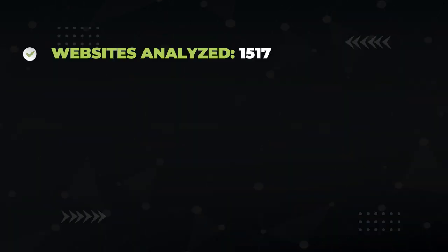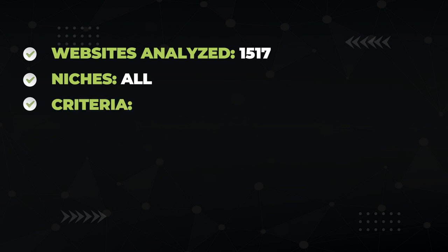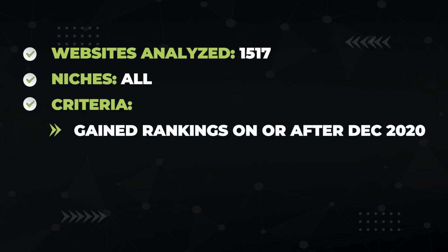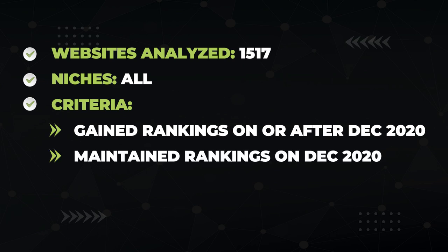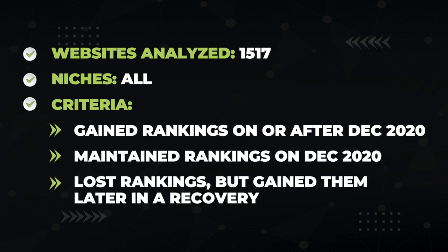Here's how we conducted this analysis. We looked at 1,517 websites over various niches from art to health to technology. Each of the websites must have met one of the following criteria: they either gained rankings and traffic in the December update, maintained rankings, or lost rankings but later recovered. If a site had one of these three criteria, we can assume Google doesn't hate their informational to commercial content ratio.